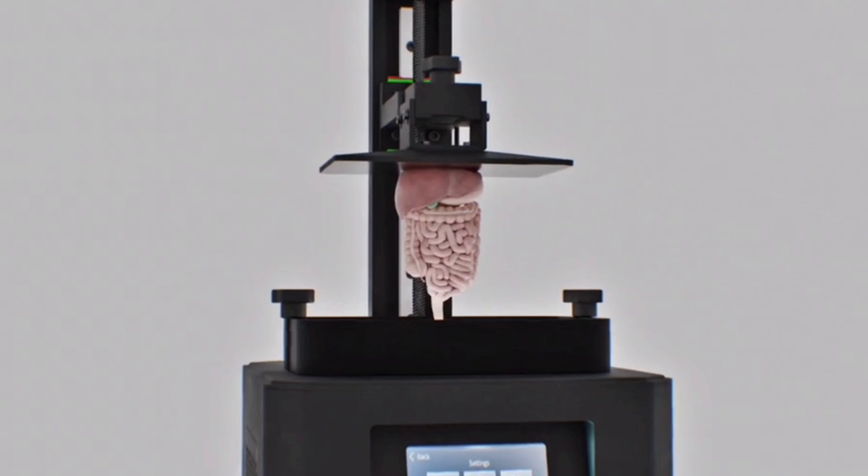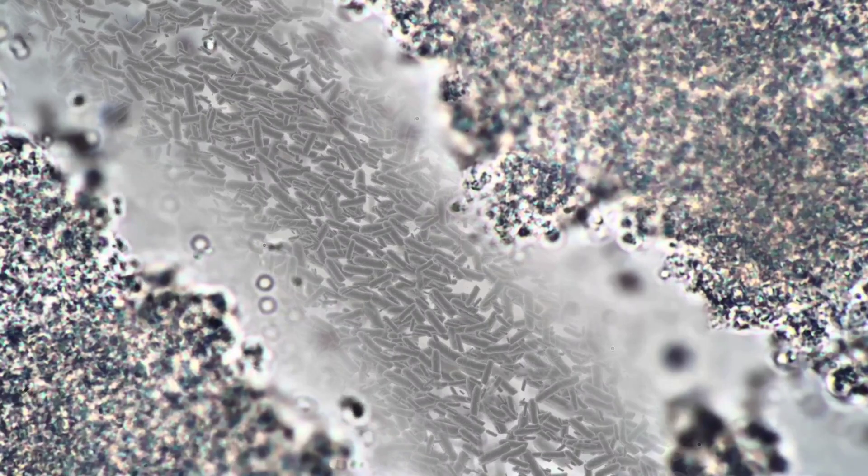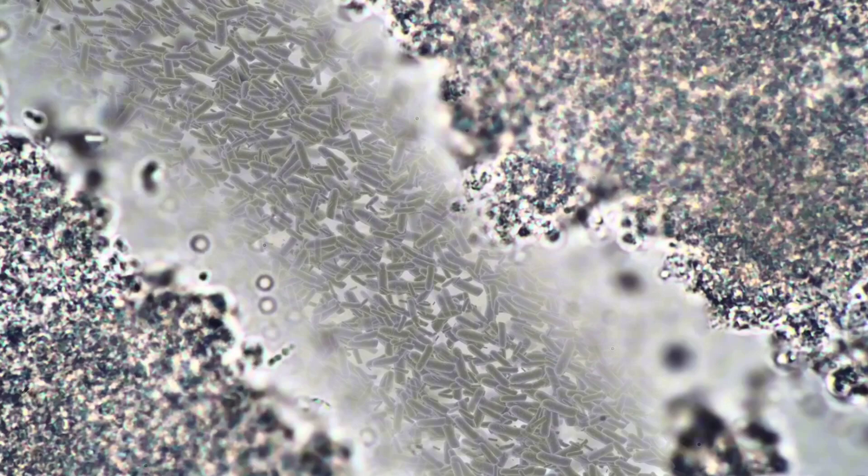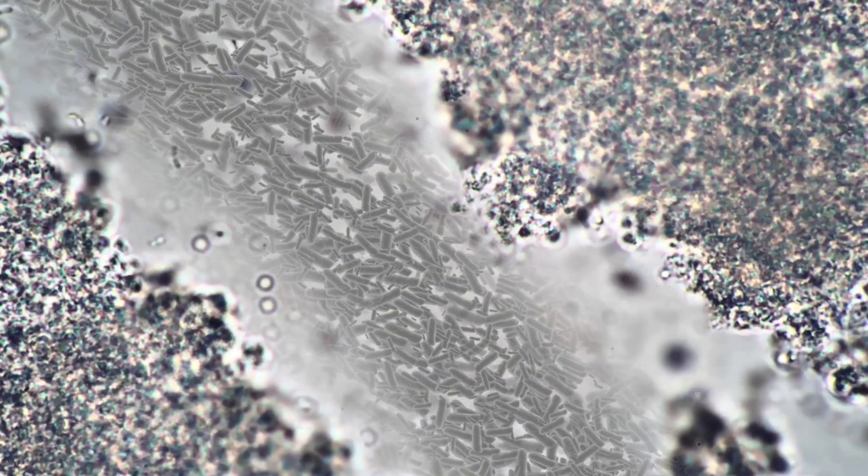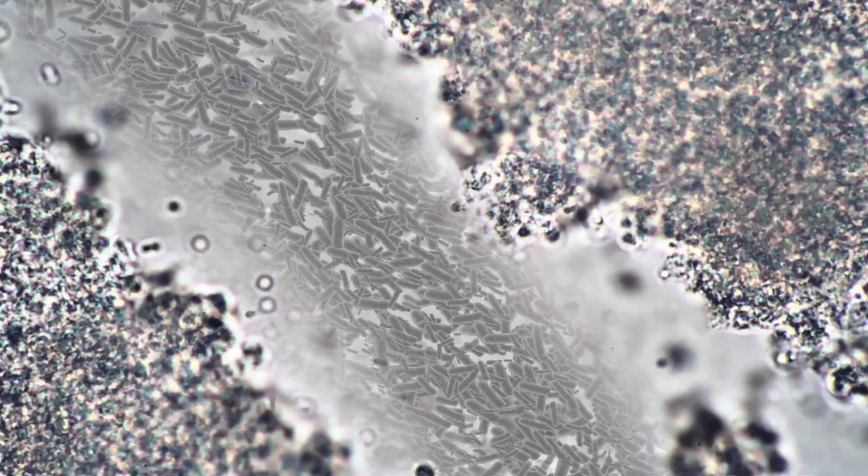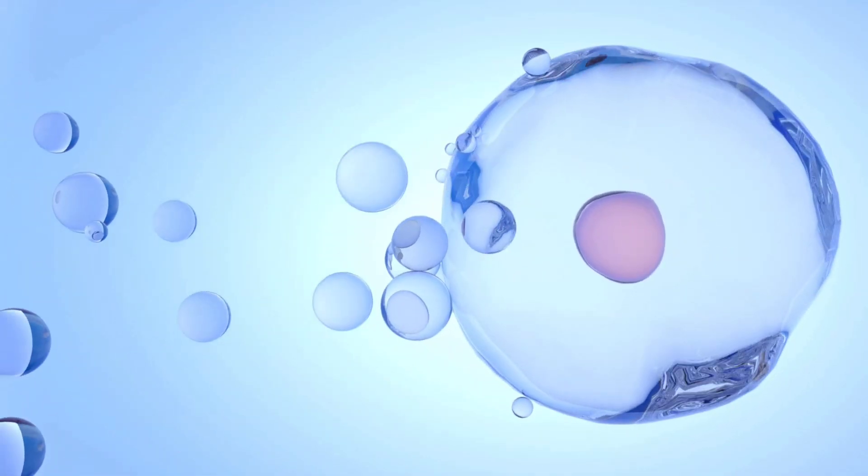By using acoustic waves, researchers can manipulate cells with incredible precision. Tiny bubbles vibrate to create waves that gently but accurately position cells as needed. This ensures that the cells are organized exactly where they need to be, mimicking the complex architecture seen in real human tissues.